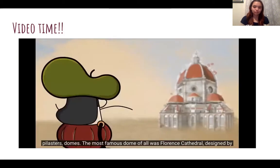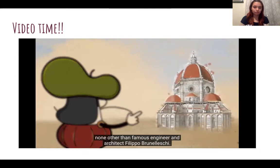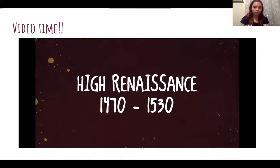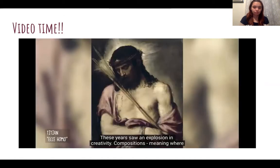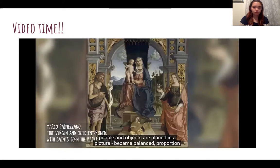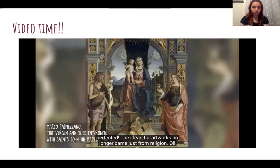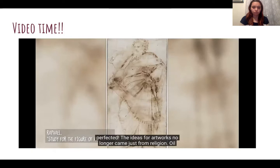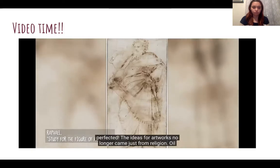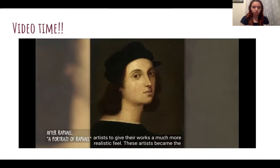The most famous dome of all was Florence Cathedral, designed by famous engineer and architect Filippo Brunelleschi. These years saw an explosion in creativity. Compositions — meaning where people and objects are placed in a picture — became balanced and proportionally perfected. The ideas for artworks no longer came just from religion. Oil paints took longer to dry and could be applied thickly or thinly, allowing artists to give their works a much more realistic feel.